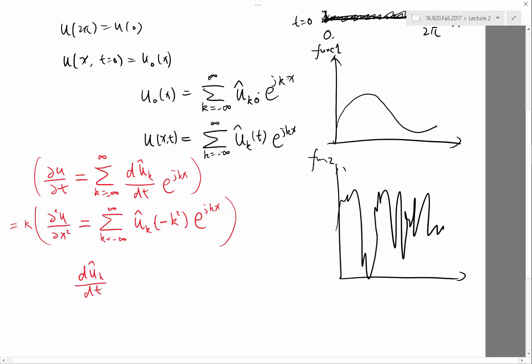In Fourier series, you can basically multiply the whole series by the same e to the j kx and integrate. You just got out of the coefficient, right? So if two Fourier series are equal, then each term actually has to be equal. That's equal to minus kappa k square times u hat of k. And that is for all k.